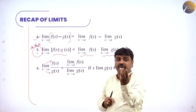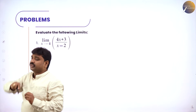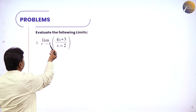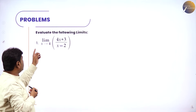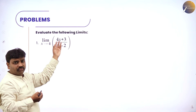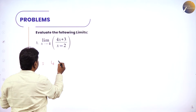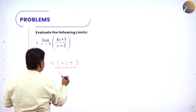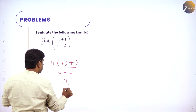Now we have to study continuity, but first let us recollect limits with some problems. Evaluate limit x tends to 4 of 4x plus 3 by x minus 2: in the place of x put 4, giving 4 into 4 plus 3 divided by 4 minus 2. That is 16 plus 3 equals 19 by 2. You applied limit and got a finite value 19 by 2. Next, limit x tends to 1 of ax squared plus bx plus c divided by cx squared plus bx plus a: put x as 1, giving a plus b plus c divided by c plus b plus a.